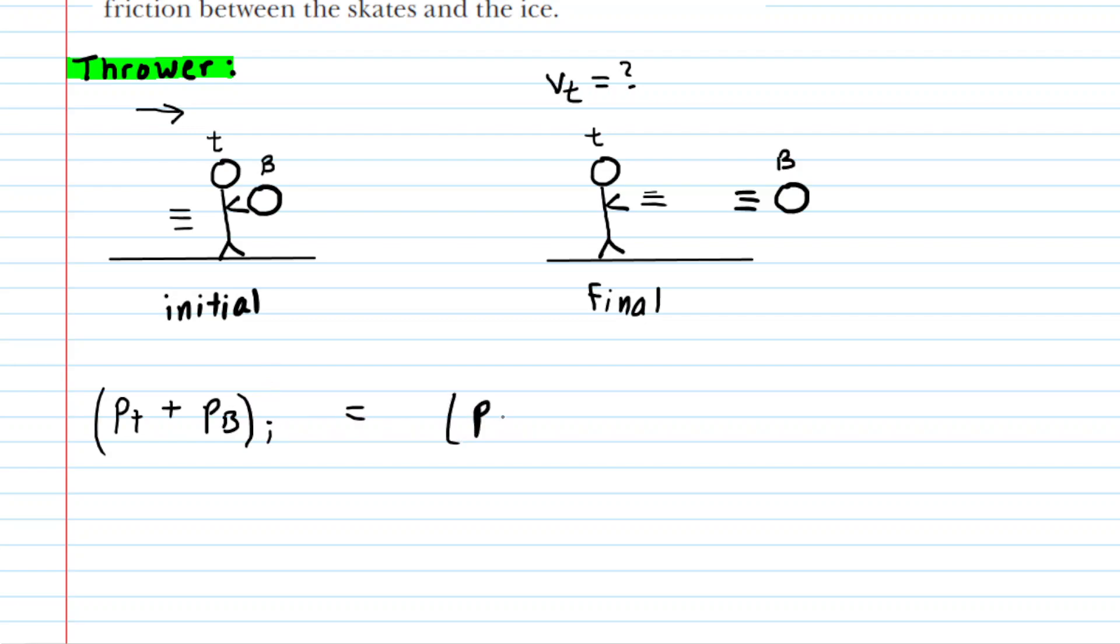will equal the momentum of the thrower plus the momentum of the ball finally. So it's basically initial total momentum is equal to final total momentum.